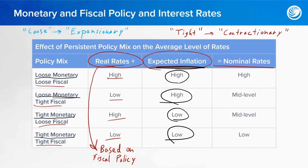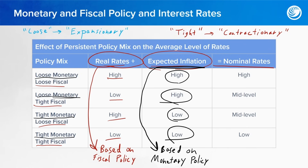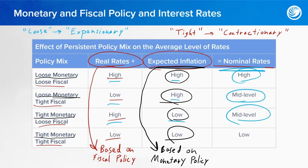So we can conclude that expected inflation is based on monetary policy. The overall effect on nominal rates is just a combination of the two — real rate plus expected rate. If both are high, we expect nominal rates to be high. If one is low and one is high, nominal rates are mid-level. And if both are low, nominal rates are low.